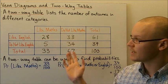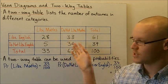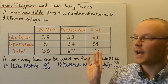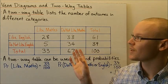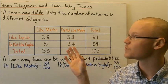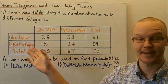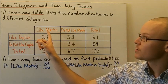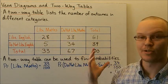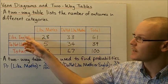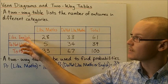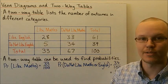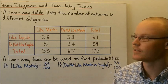Here we've got an example of 100 students that were surveyed as to whether they liked English and whether they liked Maths. The table has columns for Liking Maths and Not Liking Maths, and rows for Liking English and Not Liking English.